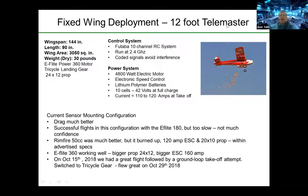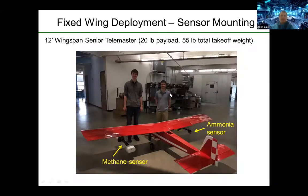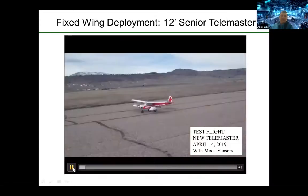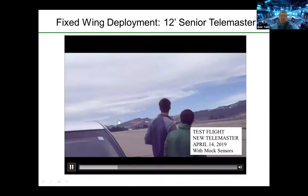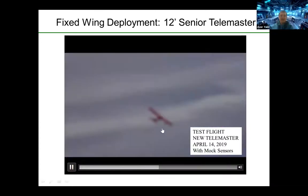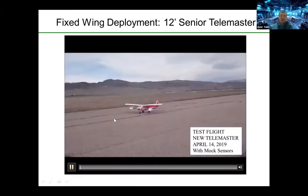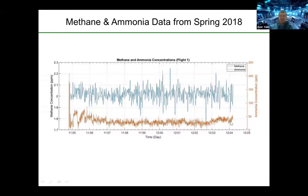We've done similar work with a fixed wing drone — a 12-foot Telemaster drone, somewhere between a hobbyist remote control plane and a research-grade UAV. Two of our recent undergraduate students, Jared and Colin, integrated the methane sensor as well as an ammonia sensor to this vehicle and did some flights. Here we see them at the Loveland remote control aircraft club taking off and doing a flight. The sensors are under the two wings, and here is an example of methane concentration and ammonia concentration versus time as recorded from that fixed wing aircraft.